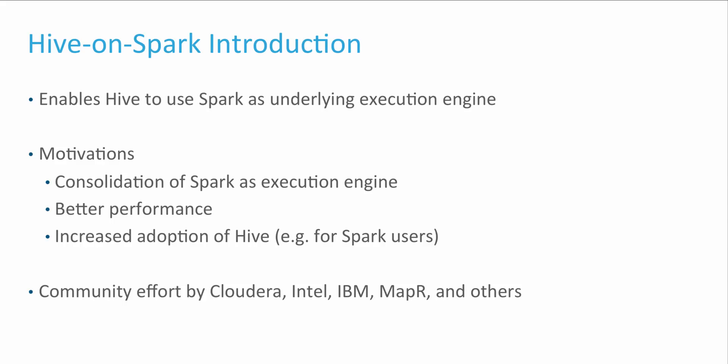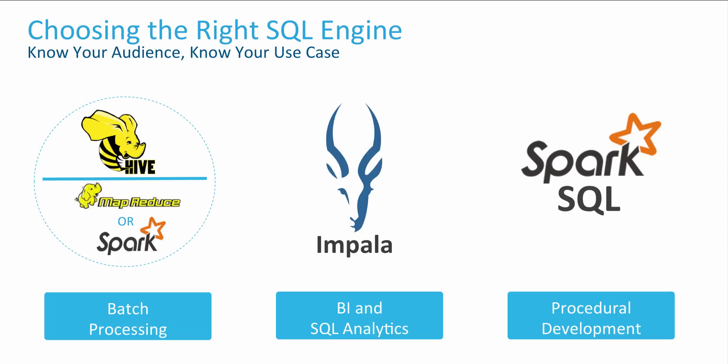Hive on Spark is an outcome of a collaborative community effort led by Cloudera and very well supported by Intel, MapR, and IBM, among others. Given the number of SQL and Hadoop technologies available, it's useful to underscore Hive on Spark's fit in this space.